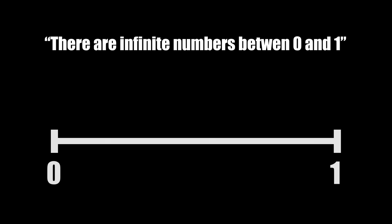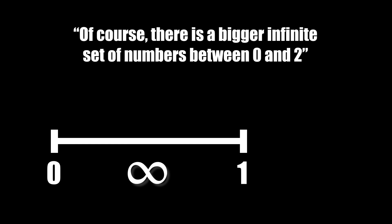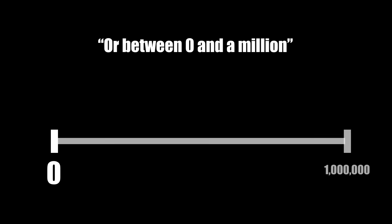There are infinite numbers between 0 and 1. There's 0.1, 0.12, 0.112, and an infinite collection of others. Of course, there's a bigger infinite set of numbers between 0 and 2, or between 0 and a million. Some infinities are bigger than other infinities.